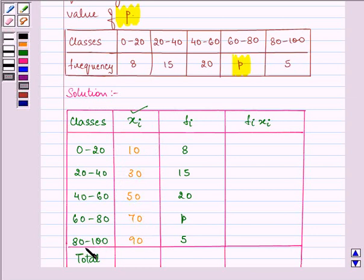That is 80 plus 100 upon 2. In each case, we will add the lower limit to the upper limit and divide the sum by 2.